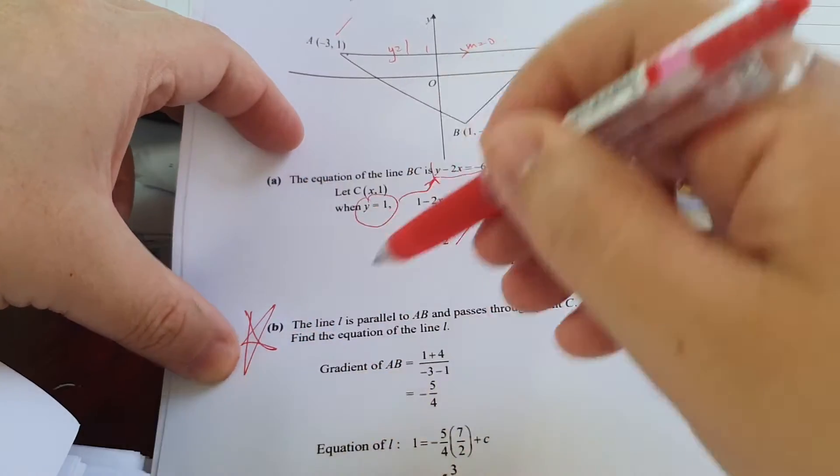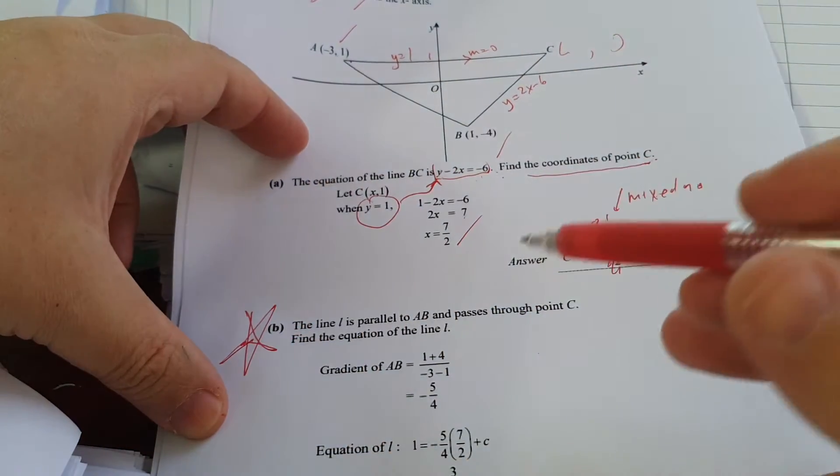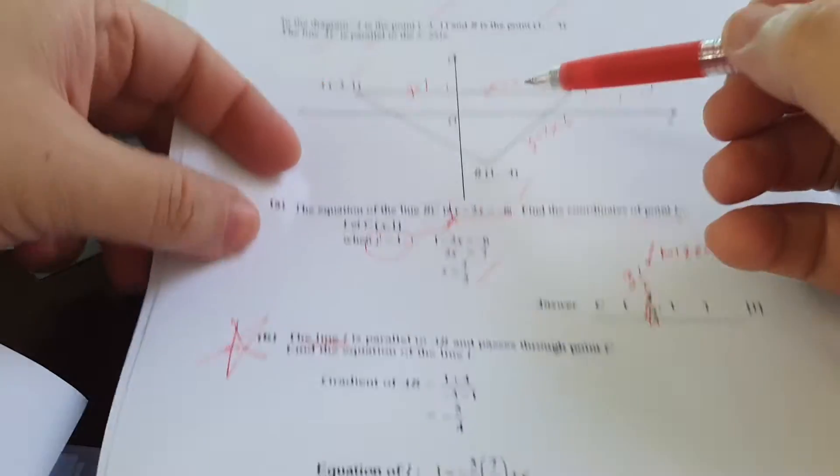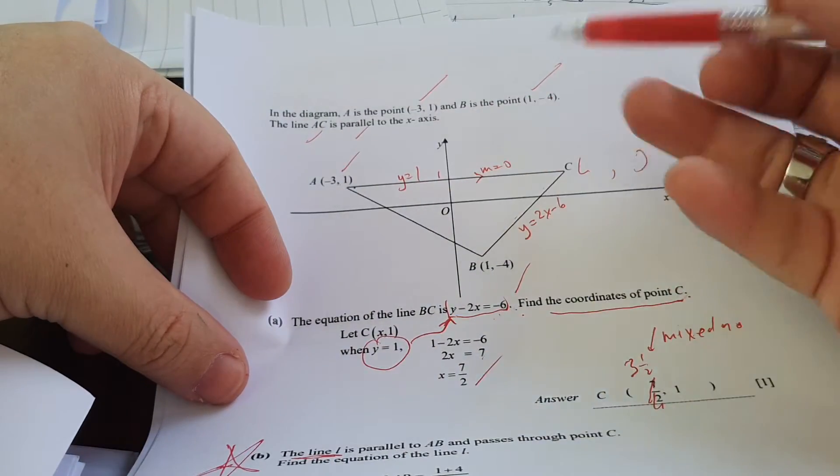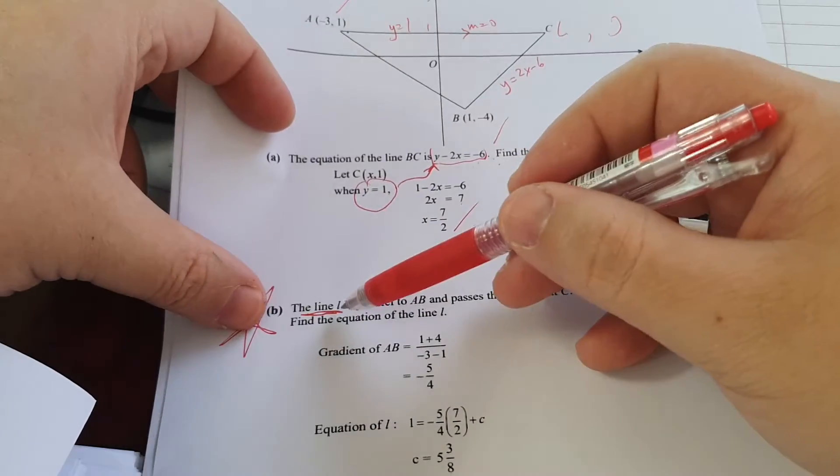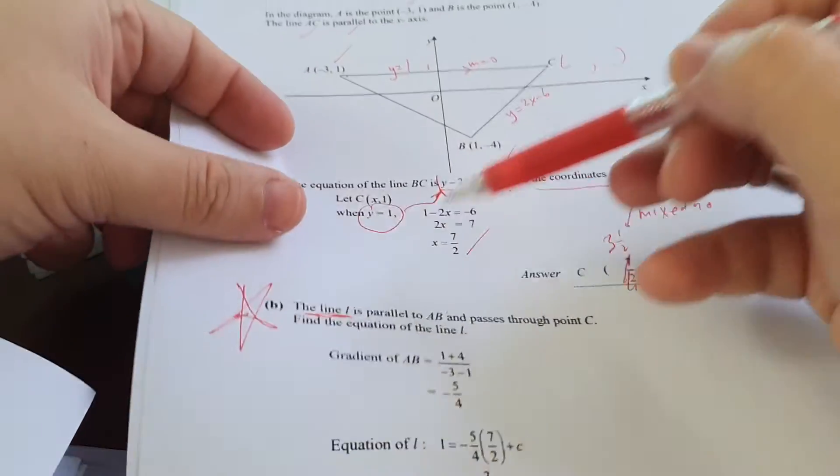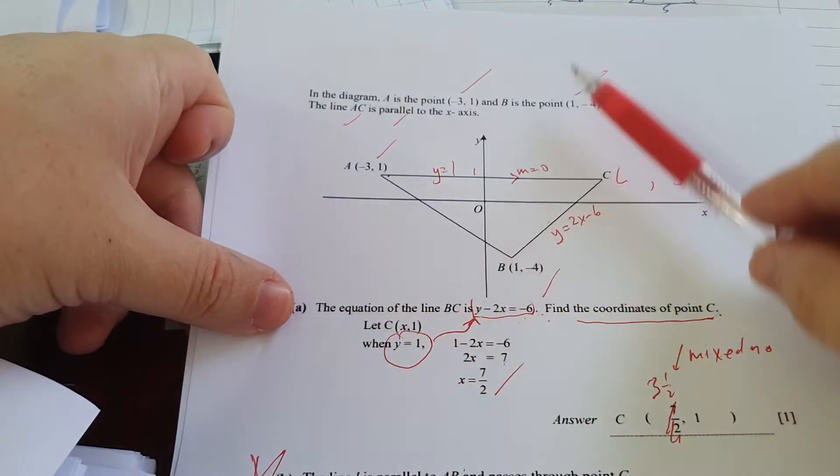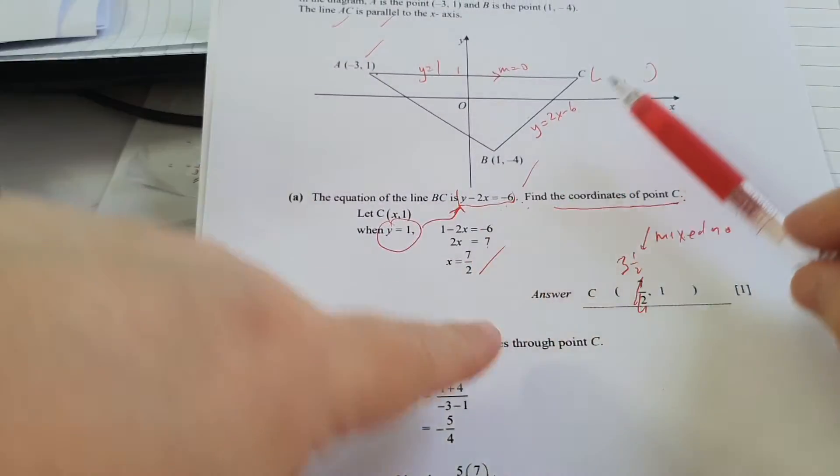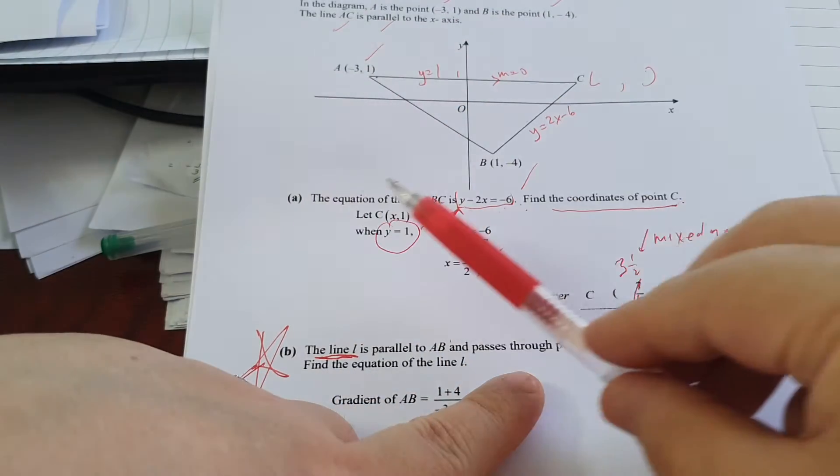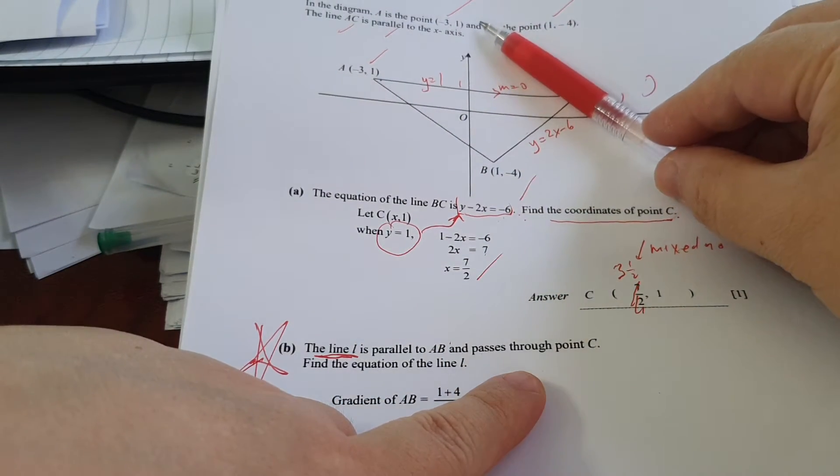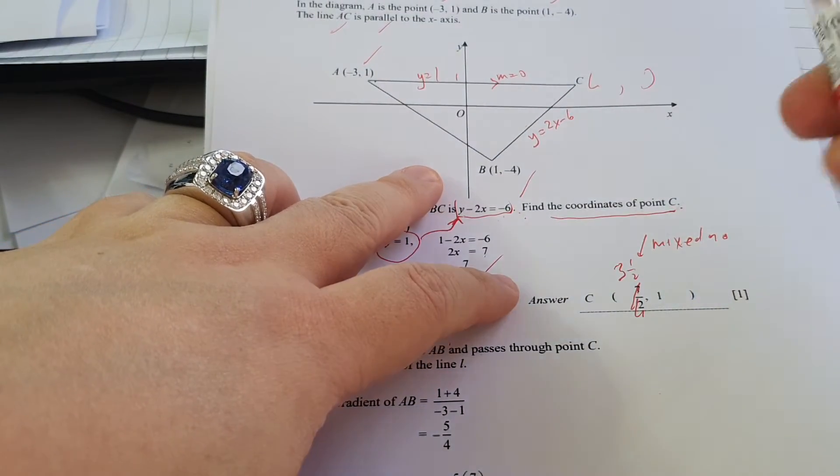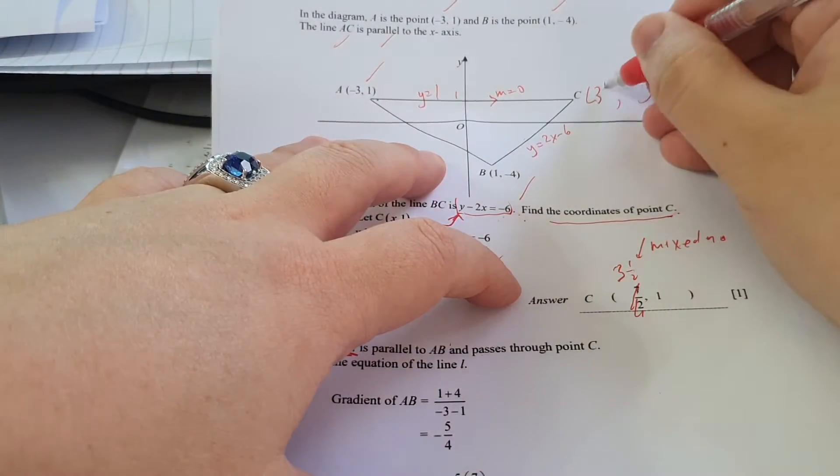Now the next question can be confusing to some people because they never read question carefully. You read, the line L, where's the line L? It's not even here on the diagram. It's parallel to AB. The line L is parallel to AB. Where is the line? I don't know, I must read on. And it passes through C, that is the thing. It must pass through C. You see, I never update the diagram, but I put it here like that. That's very bad.